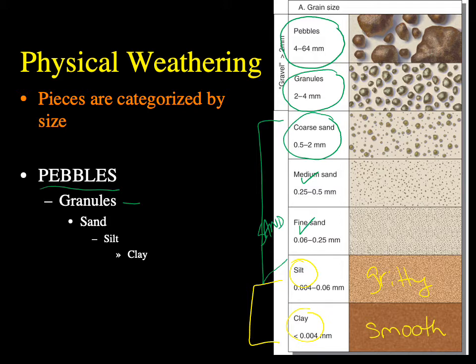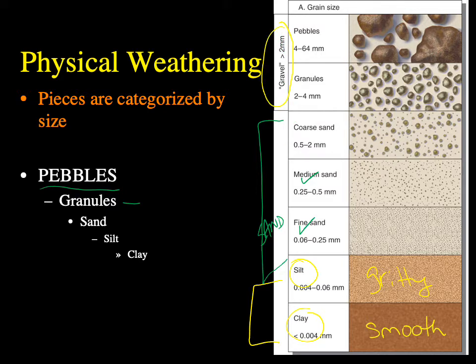All of these names — pebbles, granules, sand, silt, and clay — are names that describe size categories of sediment. When you say granules or pebbles, those denote an actual grain diameter. Note that the term gravel is used for anything greater than two millimeters — anything bigger than what you'd put in your fish tank.